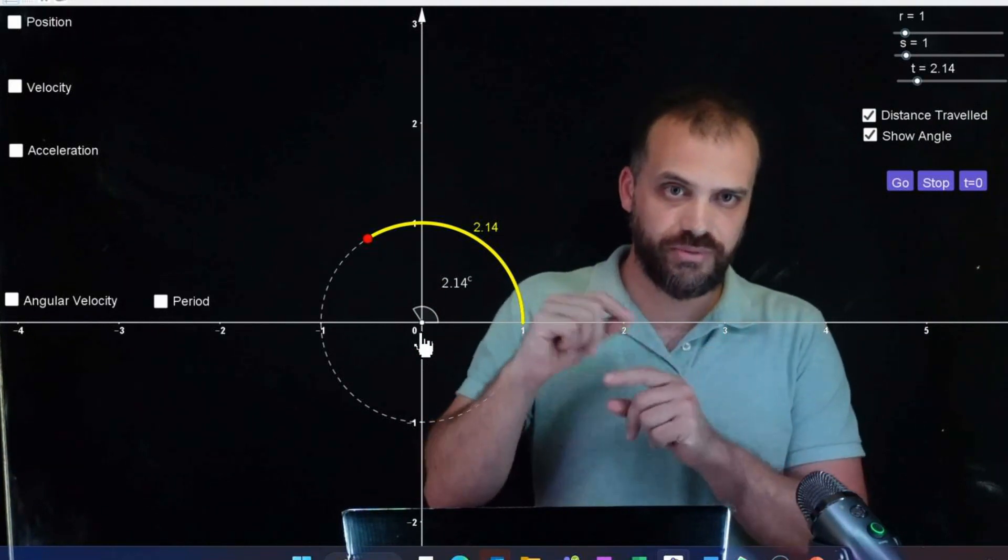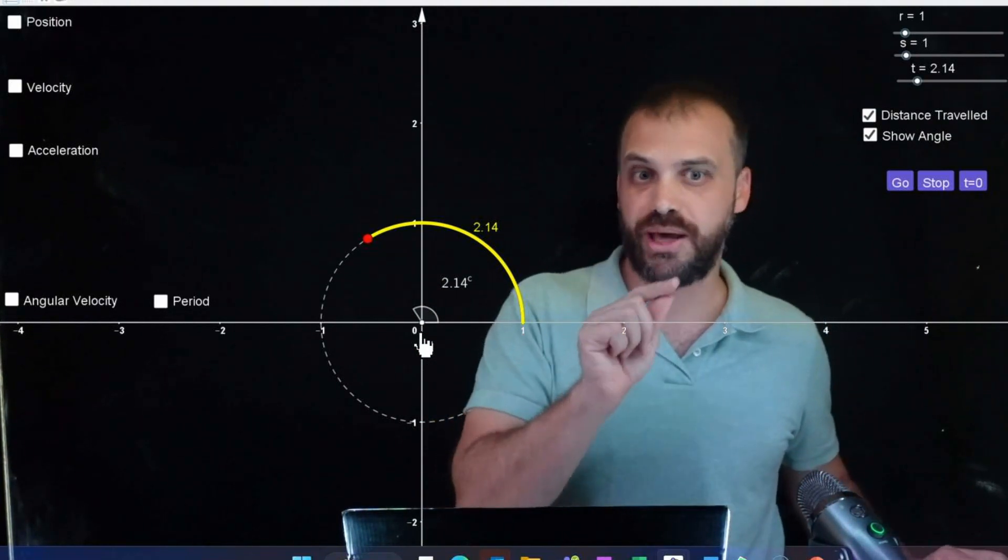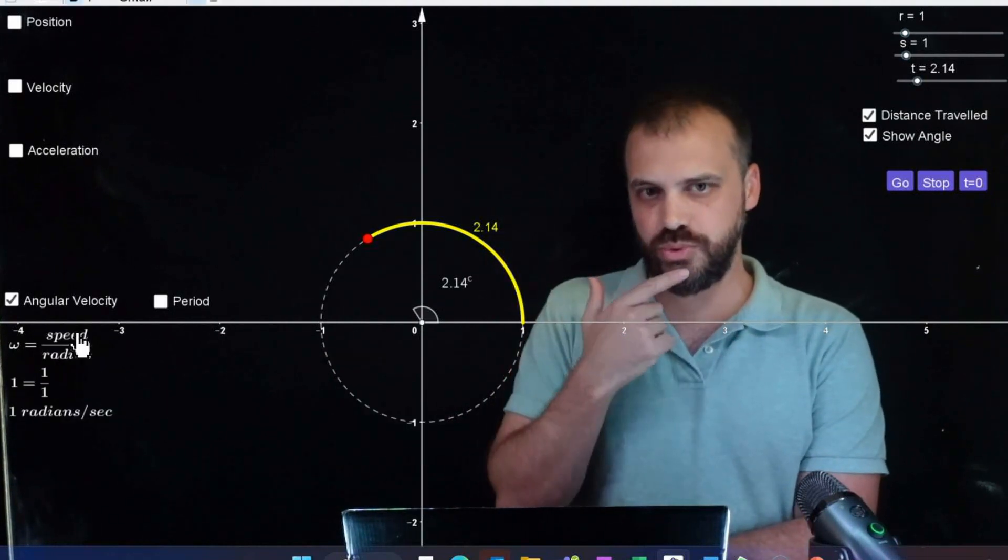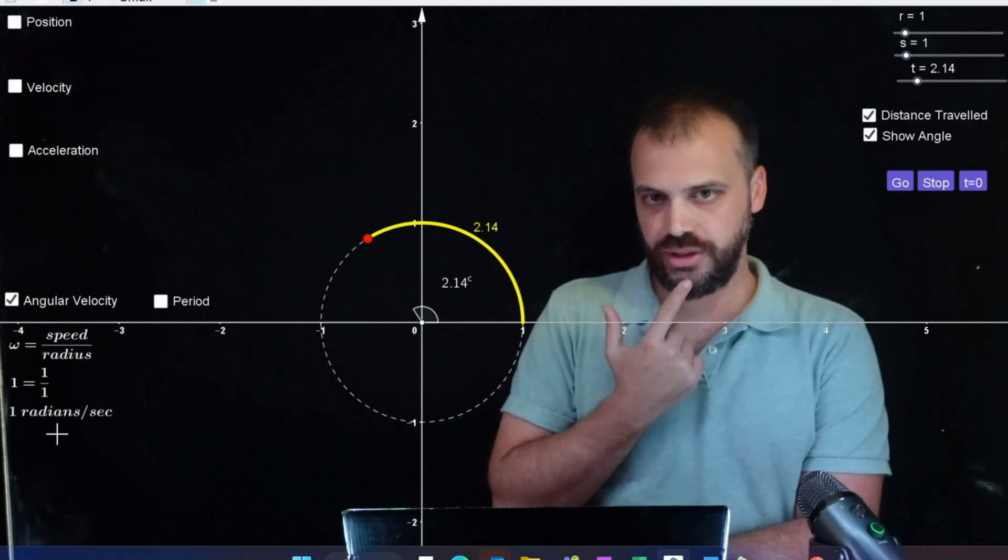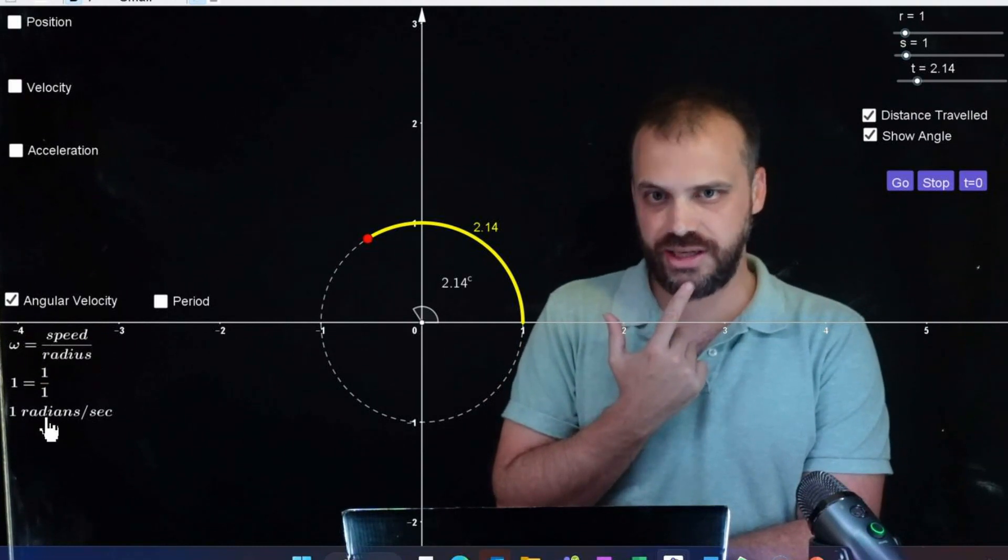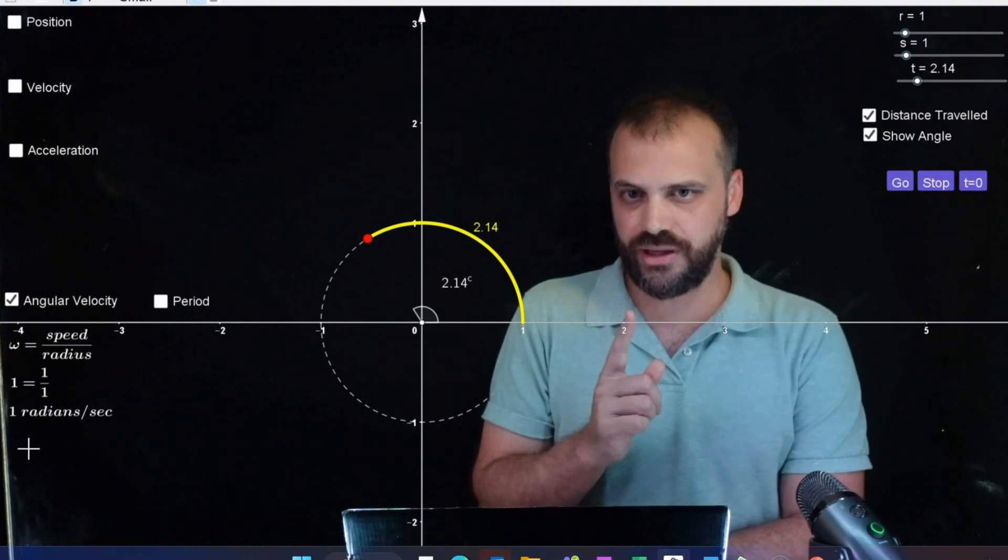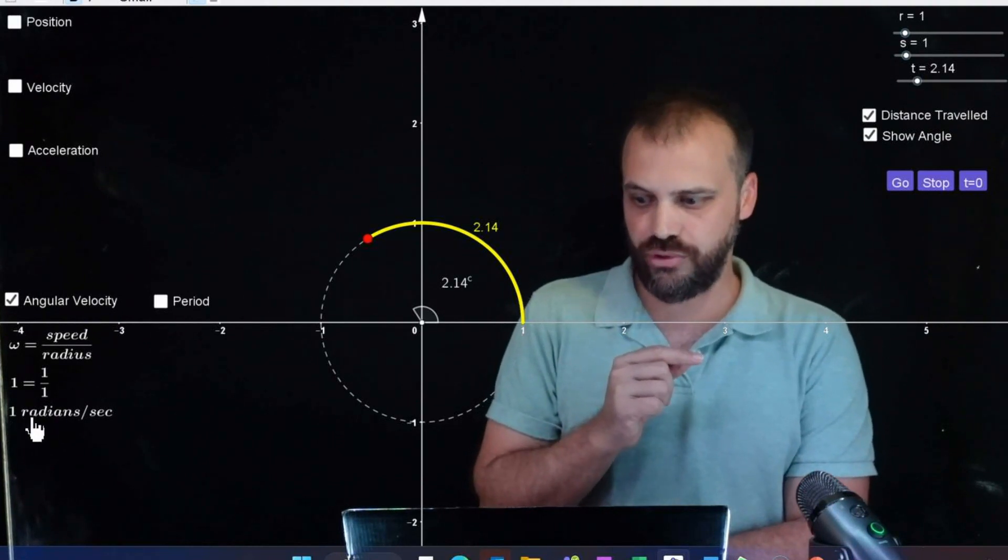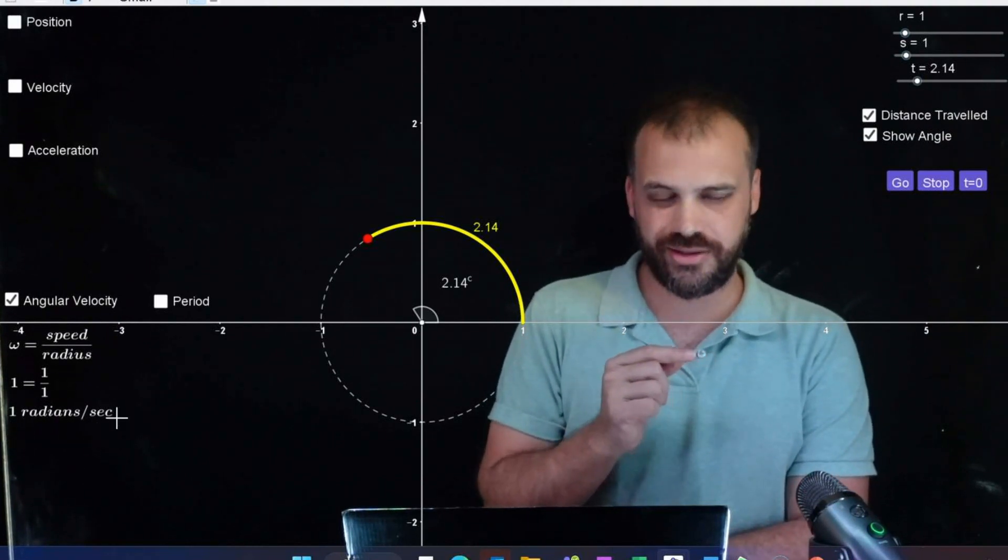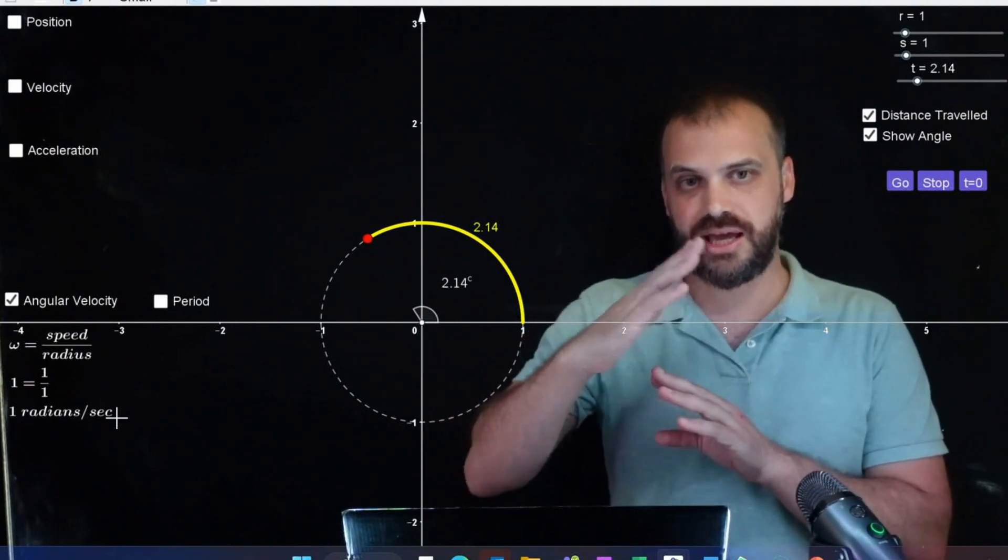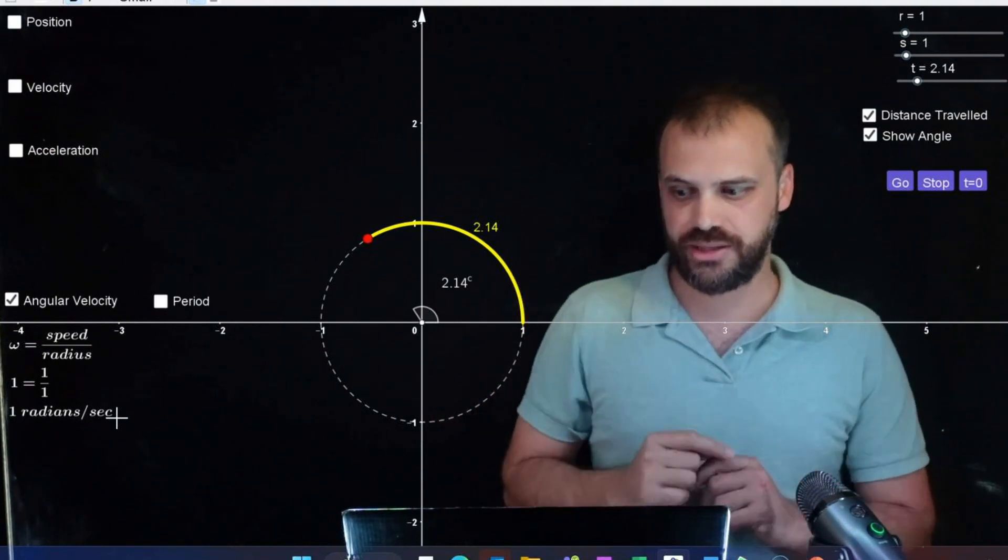So now that we've got that, we need to talk about angular velocity. So angular velocity - let's work upwards at the moment. Let's not start at the formula. Let's start down here. At the moment, my object is moving at one radian per second. That's our angular velocity, how much the angle is changing with respect to time.